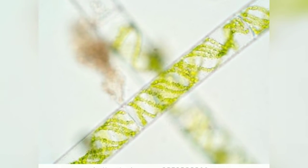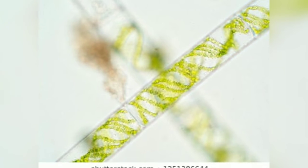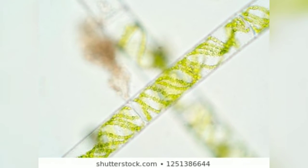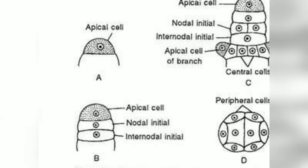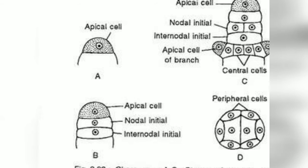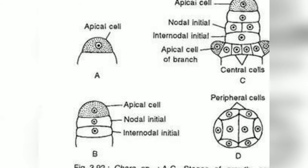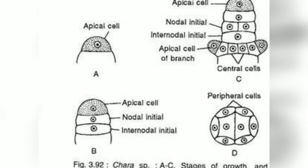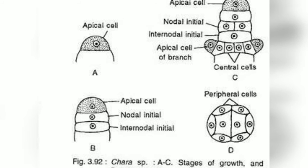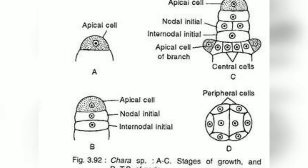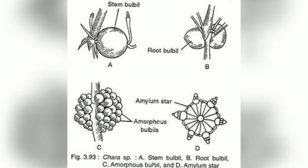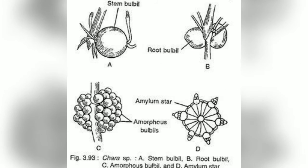The third type is amorphous bulbils. In some species, there is proliferation of cells of lower nodes as irregular aggregates called amorphous bulbils, which also help Chara in vegetative propagation.